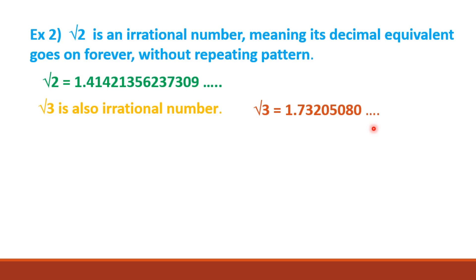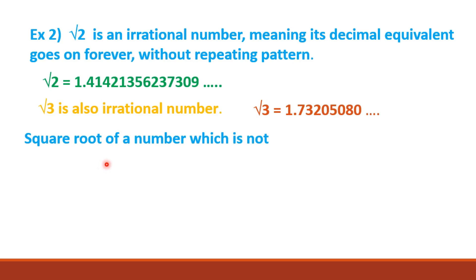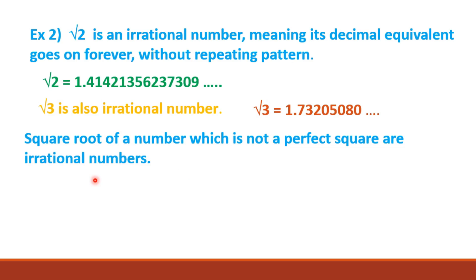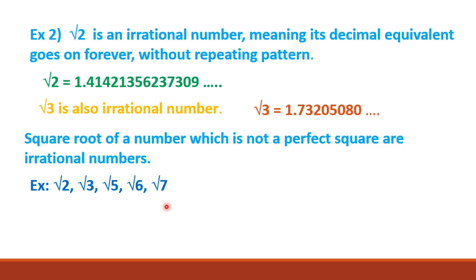Square roots of numbers that are not perfect squares are irrational numbers. For example: square root of 2, square root of 3, square root of 5, square root of 6, square root of 7, square root of 8, square root of 10, square root of 11, and so on.